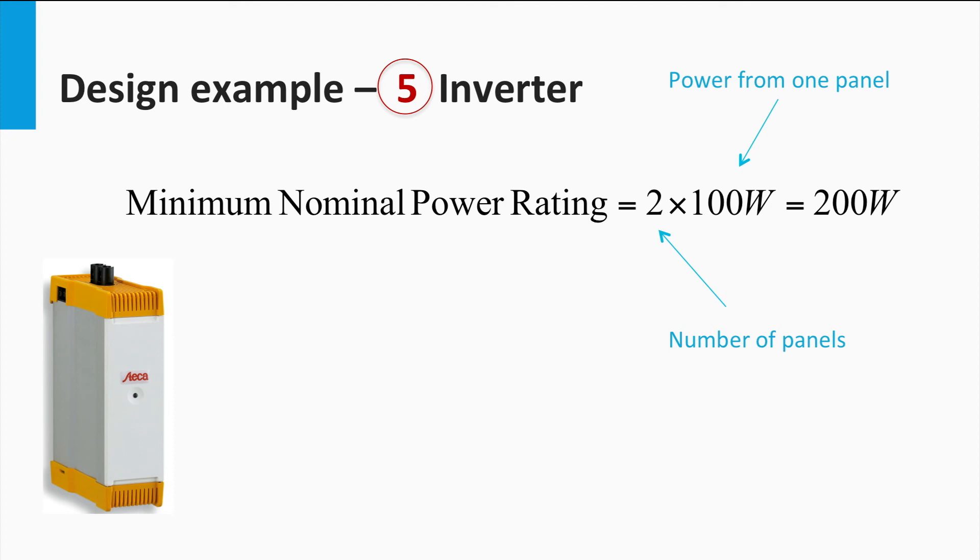So the required PV power is 200 watts. The inverter should be able to at least handle this power. Thus, we say that the minimal nominal rating of the inverter is 200 watts.